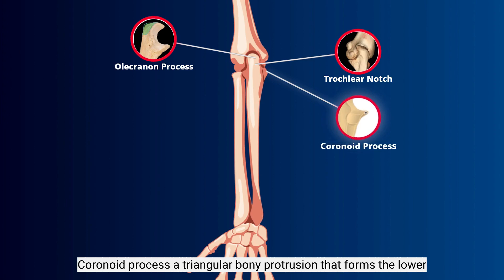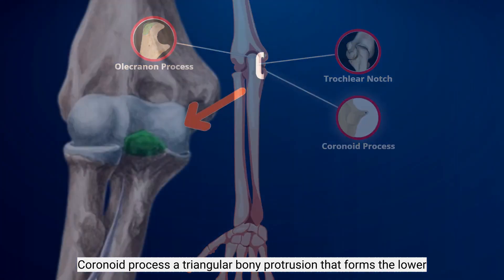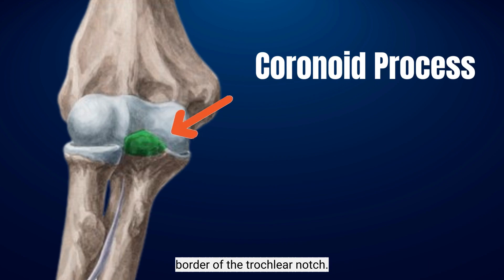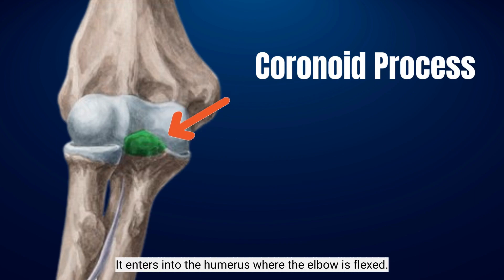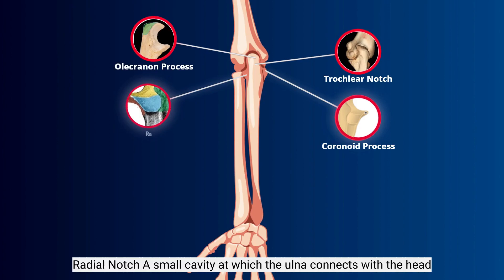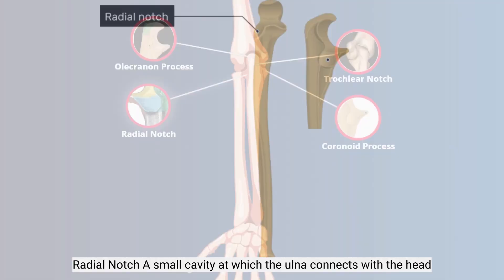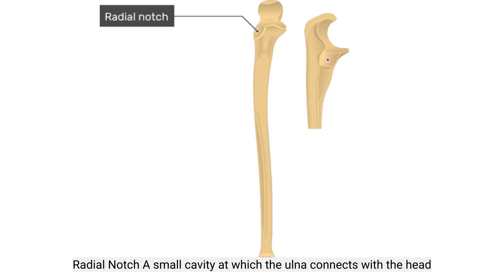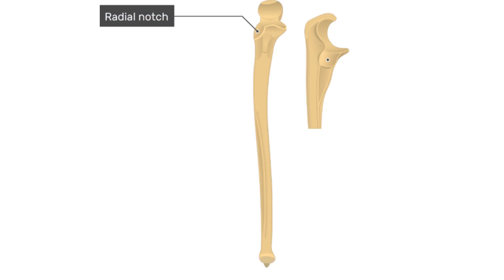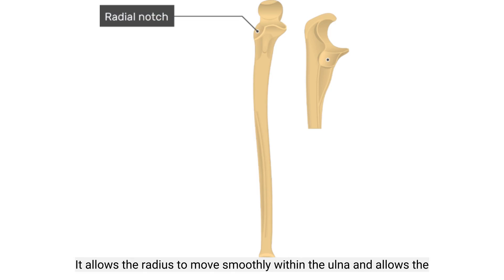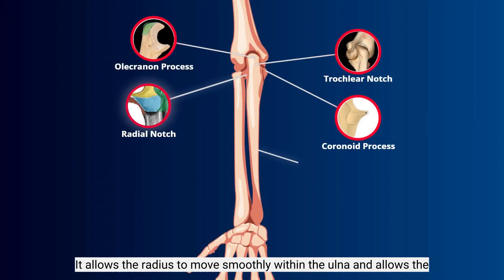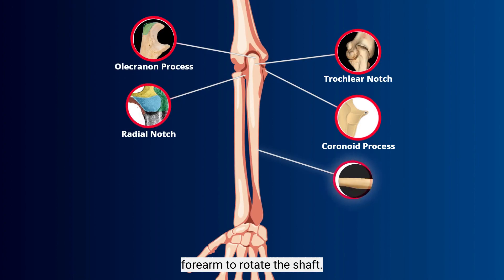Coronoid process: the triangular bony protrusion that forms the lower border of the trochlear notch. It enters into the humerus when the elbow is flexed. Radial notch: a small cavity at which the ulna connects with the head of the radius bone. It allows the radius to move smoothly on the ulna and allows the forearm to rotate.